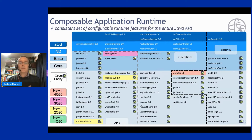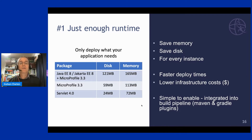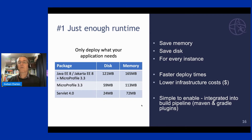Open Liberty is actually a fully functional server runtime, perfectly good for net new applications. In terms of just enough runtime, you can pick and choose capabilities — going all the way down to Servlet, which gives you a 24-megabyte package with 72 megabytes of memory, all the way up to a full Java MicroProfile package with 121 megabytes on disk and 165 megabytes of memory. This saves you money, gives you faster deploy times because you're pushing less data around in Docker, and it's really easy to enable via your Maven or Gradle plugins — the build will create the server runtime for you.